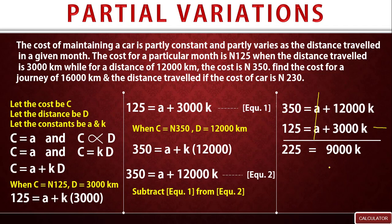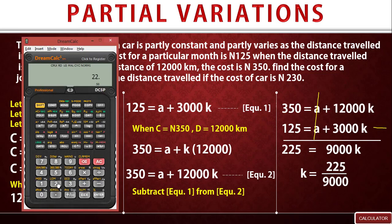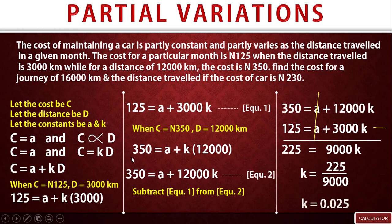Dividing both sides by 9,000: the 9,000 cancels on the right-hand side, leaving k equals 225 divided by 9,000, which equals 0.025. So k equals 0.025.